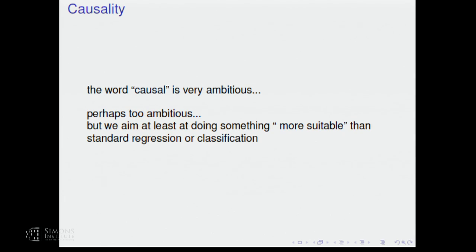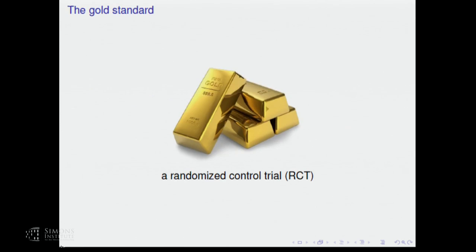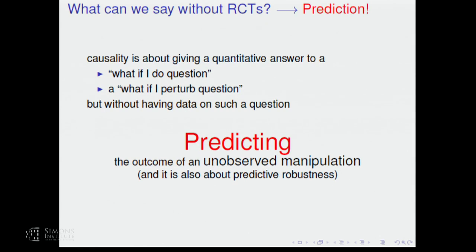Causality is super ambitious — perhaps too ambitious for many practical problems. But even if it is too ambitious, in some applications we want to do something more suitable than a technique based on standard regression or classification. Even if we cannot find the causes, maybe we can do something better than just standard regression. The gold standard in causality would be a randomized control experiment, but this is very difficult, costly, can be unethical, and many modern applications do not have access to randomized control trial data.